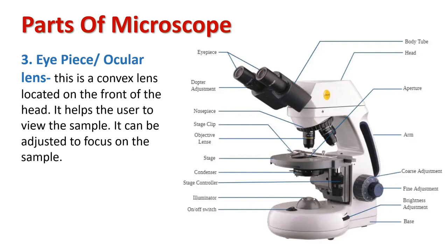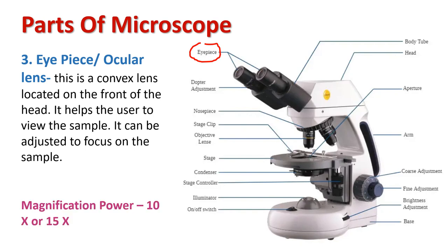The eyepiece, or ocular lens, is a convex lens which is used for viewing the sample. The eyepiece lens can be adjusted for fine tuning of focus and magnification. Its magnification power can be 10x or 15x. A compound microscope can have one, two, or three ocular lenses.